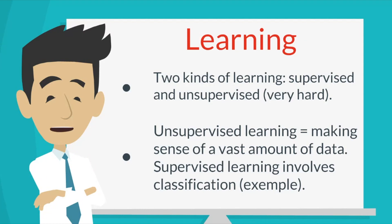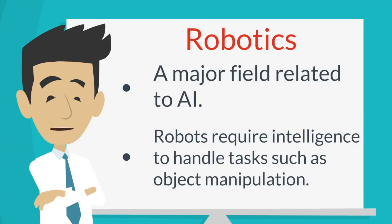By the way, if you want to learn more about the differences between AI and machine learning, I did an entire video about this and I will put a link so you can check it. Another problem is the ability to manipulate and move objects. Robotics is also a major field related to AI, because robots require intelligence to handle tasks such as object manipulation and navigation.